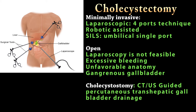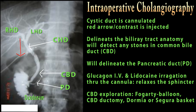Cholecystostomy — percutaneous transhepatic drainage of the gallbladder — is indicated if the patient is not a surgical candidate. It is performed by interventional radiology as a temporary measure until the patient improves and can withstand surgery. If we suspect the presence of common bile duct stones, we perform intraoperative cholangiography routinely. It is our practice to give glucagon and irrigate the duct with local anesthetic lidocaine to help relax the sphincter of Oddi in order to flush the stones out.